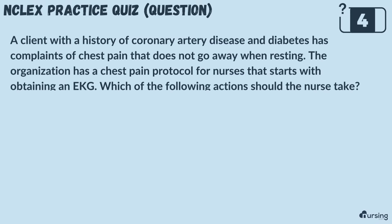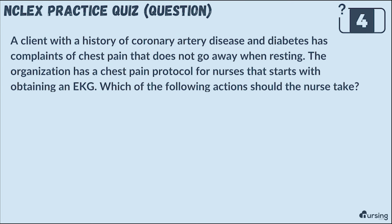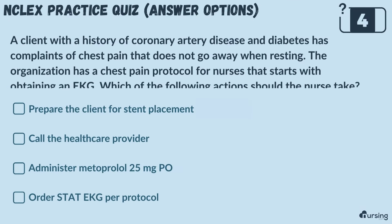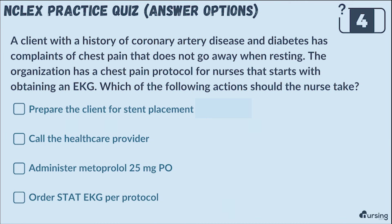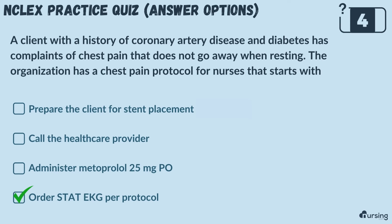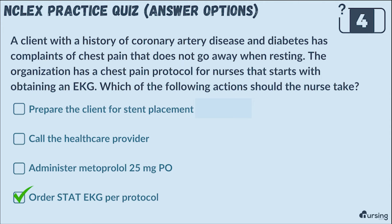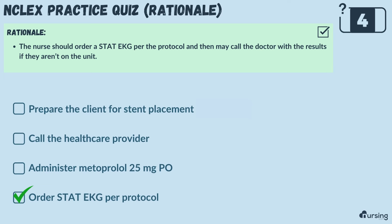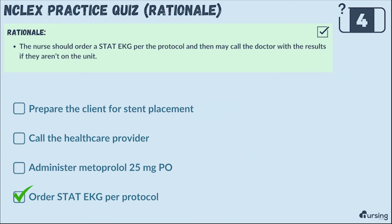A client with a history of coronary artery disease and diabetes has complaints of chest pain that does not go away when resting. The organization has a chest pain protocol for nurses that starts with obtaining an EKG. Which of the following actions should the nurse take? Is it: prepare the client for stent placement, call the health care provider, administer metoprolol 25 milligrams PO, or order stat EKG per protocol? The correct answer is order stat EKG per protocol.